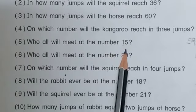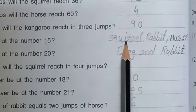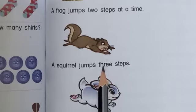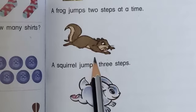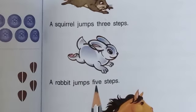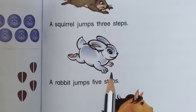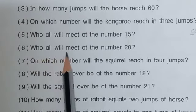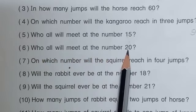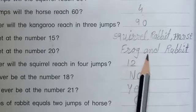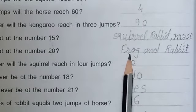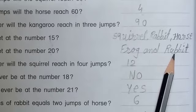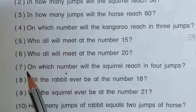Question number 5: who all will meet at number 15? First: squirrel — 3 times 5 equals 15, so 15 is in the 3 times table. Rabbit — 5 times 3 equals 15, so rabbit also reaches 15. And horse — 15 times 1 equals 15. Next, question number 6: who all will meet at number 20? Frog — 2 times tables include 20. And rabbit — 5 times tables also include 20.